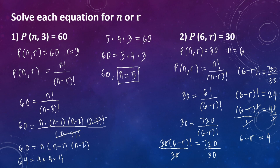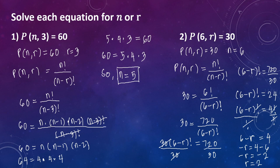And then yung 6, ilipat natin dito kay 4 doon sa right-hand side ng ating equation. So negative r equals 4 minus 6, which is negative 2. So i-divide both sides natin ng negative 1 — maka-cancel na yung negative dyan. That will become r equals positive 2. So the value of r is 2. Sa number 2, ang value ni r ay 2.